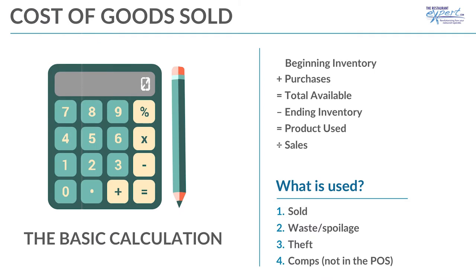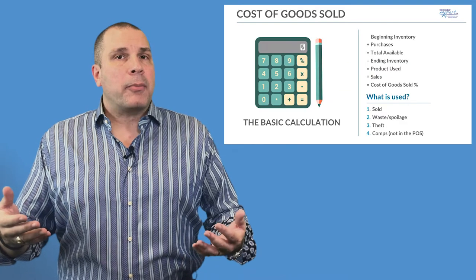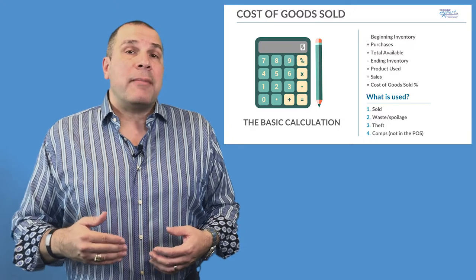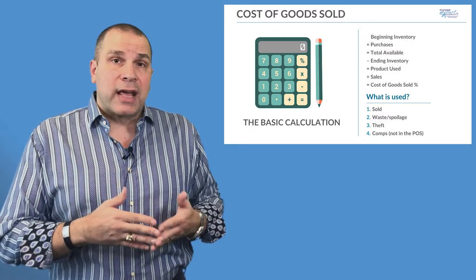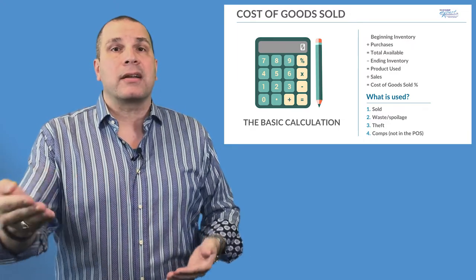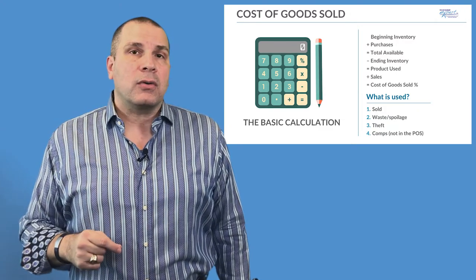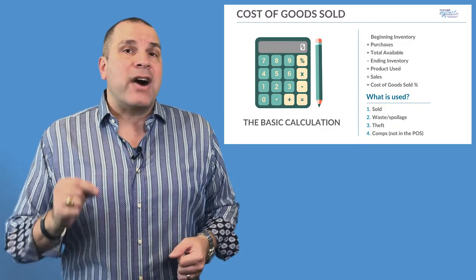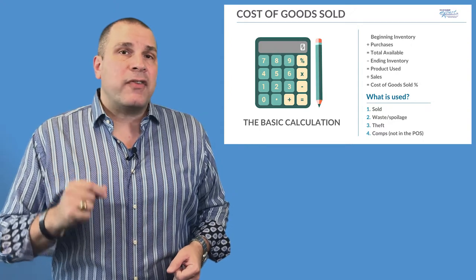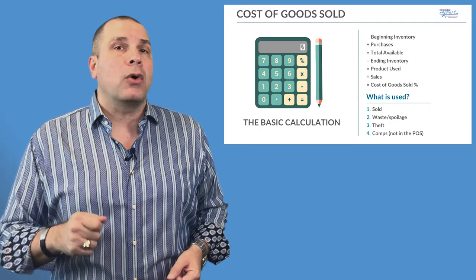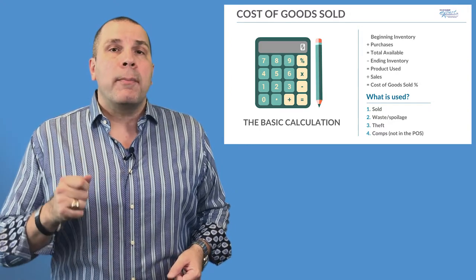Now we take our total product use divided by the sales for that same period, and we come up with our food cost percentage — our cost of goods sold percentage. So if I come up with a 30% food cost, that means for every dollar in food sales that came in, I used 30 cents in product to bring that dollar in. That's your cost of goods sold — an incredibly vital part of your business, a piece of information you must know to control your bottom line.